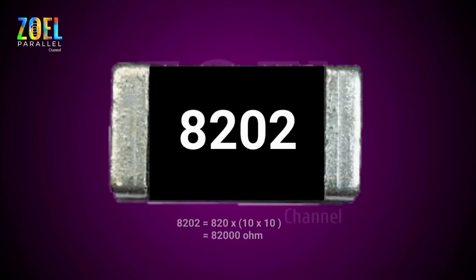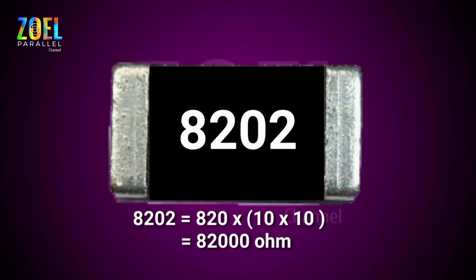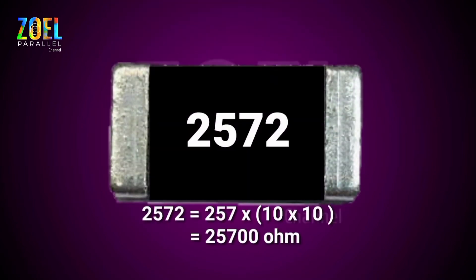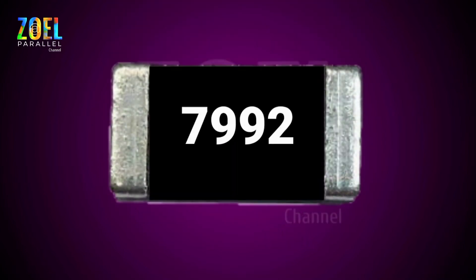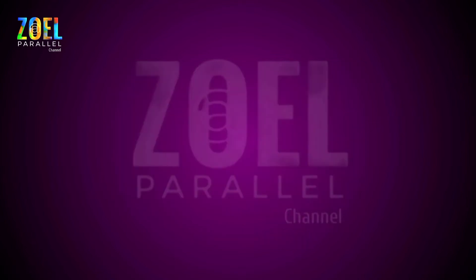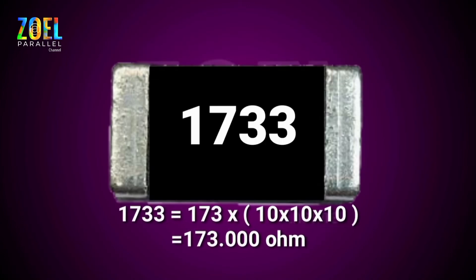Contoh: 8202 sama dengan 820 × 10² sama dengan 82.000 ohm. 2572 sama dengan 257 × 10² sama dengan 25.700 ohm. 7992 sama dengan 799 × 10² sama dengan 79.900 ohm. 1733 sama dengan 173 × 10³ sama dengan 173.000 ohm.